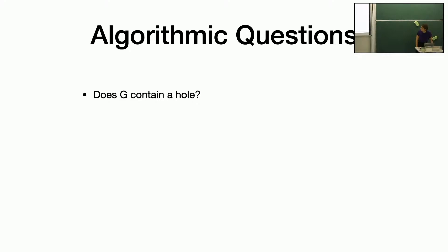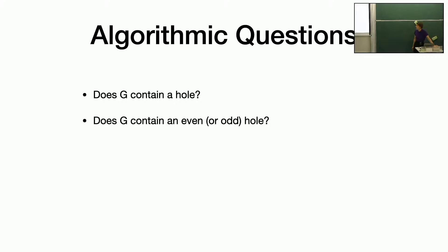Now I'll talk about what kind of algorithmic questions people have thought about in terms of detecting holes. Does G contain a hole? It's pretty trivial to get a polynomial time algorithm — you can just use Dijkstra. There's been work to get it to run in linear time in the number of vertices plus edges, by a result of Tarjan, Lueker, and Rose from the 1980s. Significantly harder is: does G contain a hole of a specific parity? The even hole result I mentioned; the odd hole result was open for a very long time and got solved in 2018. People prior to that actually thought it might be NP-hard.